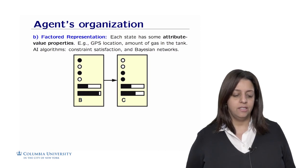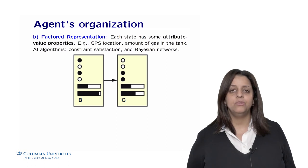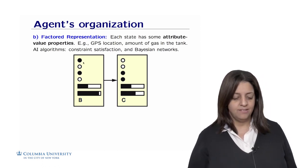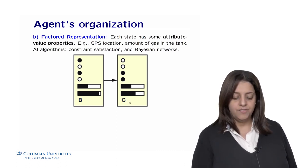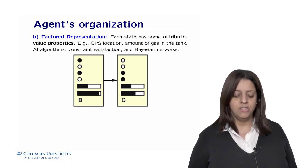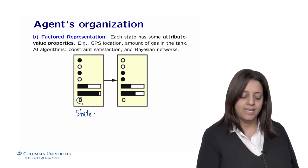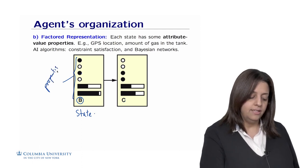A second way of representing information is called factored representation, in which each state has attribute-value properties. Going from state B to state C, we might have information such as GPS location, the amount of gas in the tank, and so on. Two states can share different characteristics — for example, they might share a flag on a particular attribute. So the state is not just a black box; it carries feature or attribute-value information describing its properties.